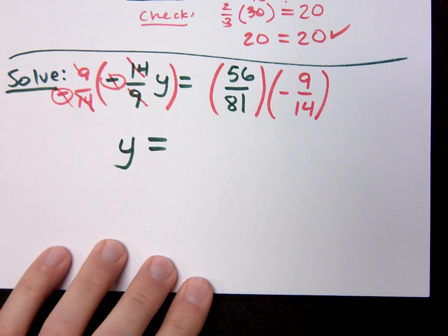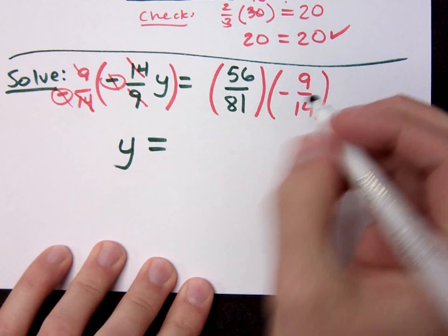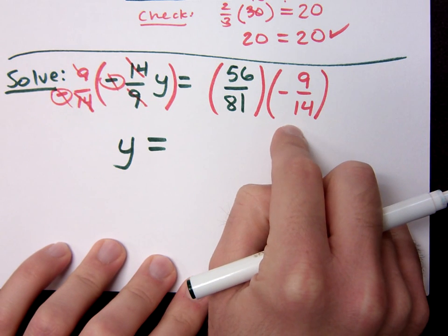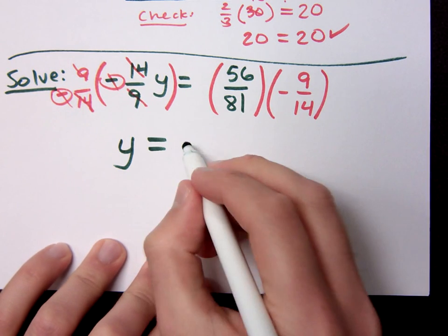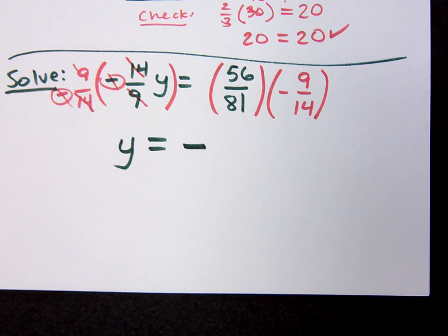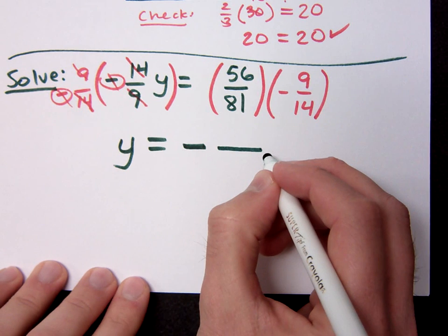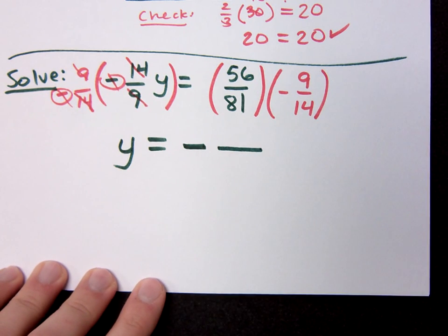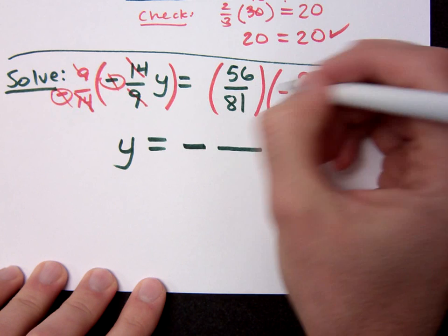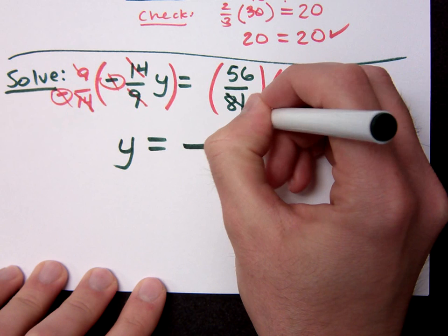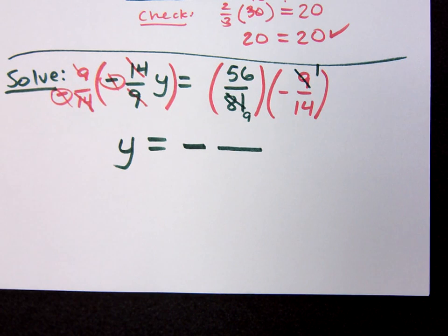Now before you start reducing, and that's good, 9 and 81 will reduce, but before you do that, don't forget about your negative sign. I've got a positive times a negative, so what will my end result be in terms of a sign? It's a negative. It's important that we identify that and we write that, because a lot of times students start simplifying and they lose sight of the fact they had a negative. So, 9 and 81 have a common factor of what? 9 goes in here once and in here 9 times. Do you all agree? Is there anything, any other simplifying I can do? Is 14 going to 56 three times?